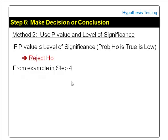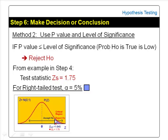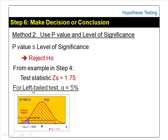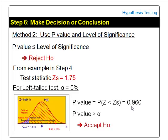Using the example from step 4, the test statistic zs is 1.75. For the right-tailed test, alpha is 5% (shaded in blue) and the p-value — the area to the right of zs — was found to be 4% (shaded in red). Since p-value 4% is less than alpha 5%, the conclusion is: reject the null hypothesis. For the left-tailed test, alpha is 5% on the left tail and the p-value — the area to the left of zs — was found to be 96%. Since p-value 96% is greater than alpha 5%, the conclusion is: accept the null hypothesis.